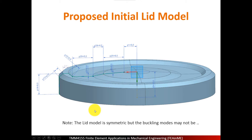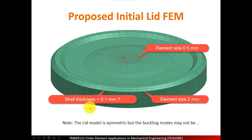So be careful if you do so — initially I recommend you to use a full model. Here you can see the mesh. The mesh size is quite small. For these dimensions I've chosen an element size of 0.5 millimeters; that's the smallest elements in the center of this lid, and on the outer edges the element size is roughly 2 millimeters. I've chosen a shell thickness of 0.1 millimeter, but this is just a guide — you can change these parameters.